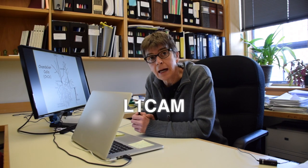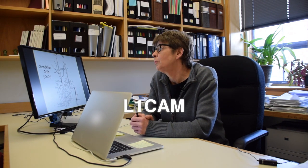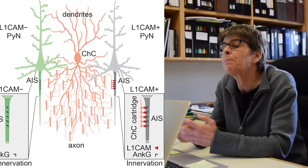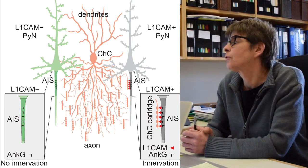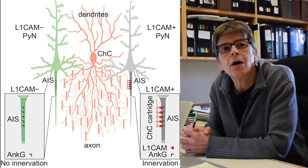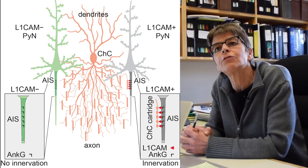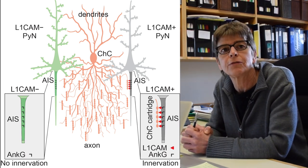Now, remarkably, of all the molecules we screened, only the pan-axonal adhesion molecule L1-CAM emerged to be critical for the innervation of the pyramidal AIS by chandelier cells, because silencing or depleting L1-CAM in the pyramidal neuron resulted in a marked decrease of chandelier cell cartridge innervation at the AIS.